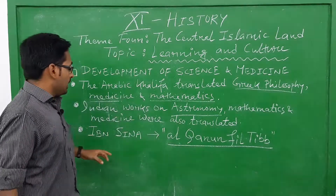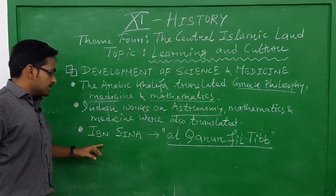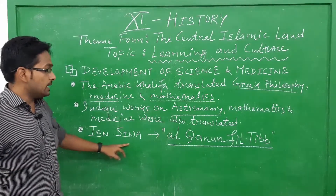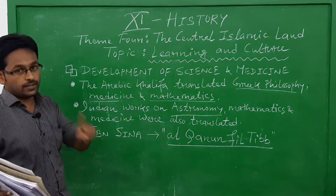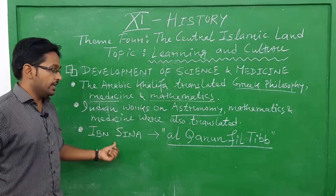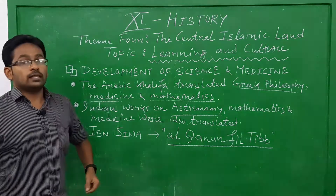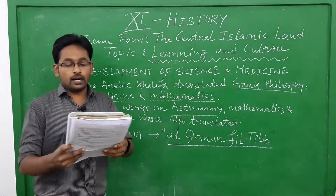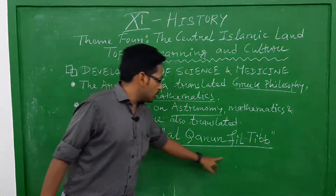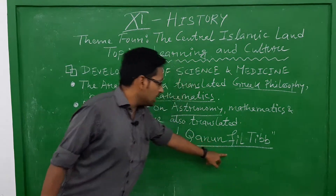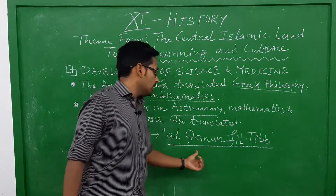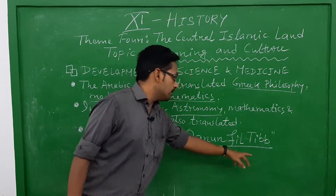There is an Islamic philosopher and doctor named Ibn Sina — this is very important for objective type questions. He wrote a book called Al-Kanun Fil-Tibb. In this book, Ibn Sina mentioned about 760 drugs, giving discussion about many diseases and how they could be cured by different types of drugs.